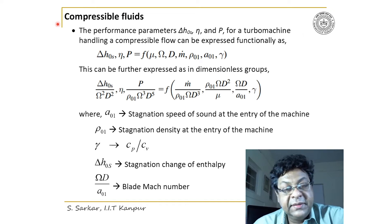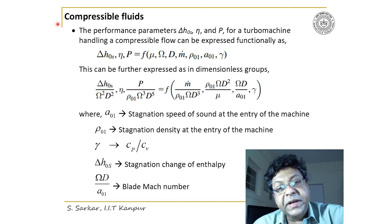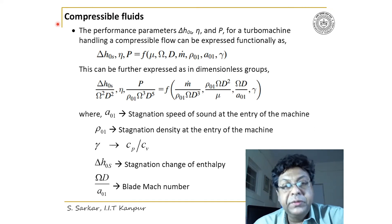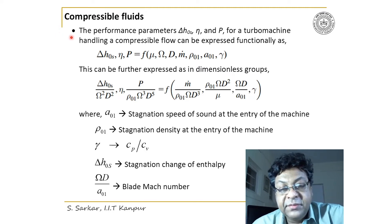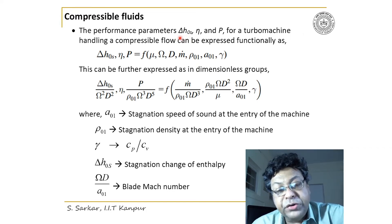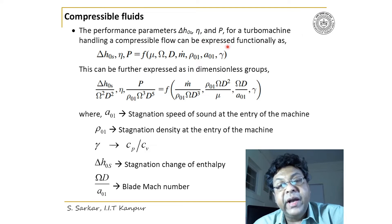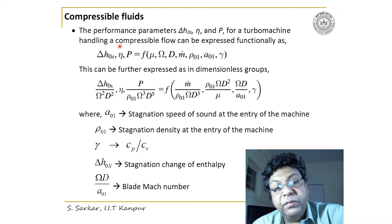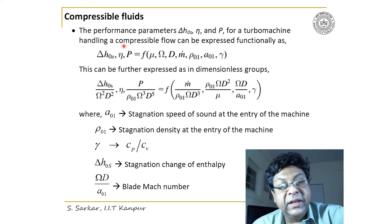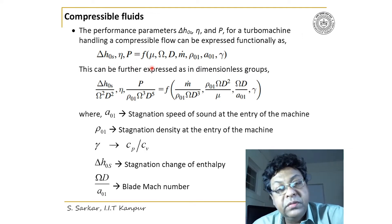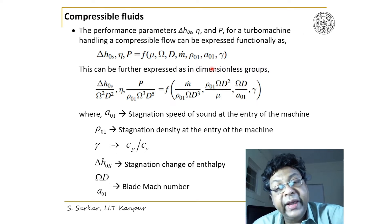Let us consider thermomachines handling compressible flow. The performance parameters — ΔH0s (isentropic enthalpy rise or drop), efficiency η, and power P — can be expressed functionally as a function of μ, ω, D, ṁ, ρ01, a01, and γ.